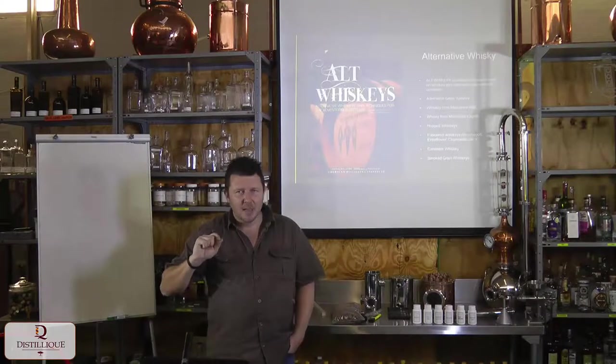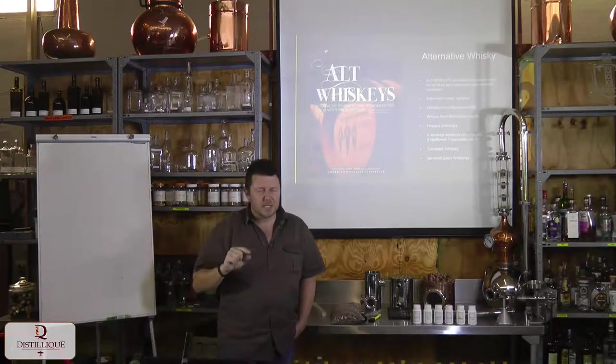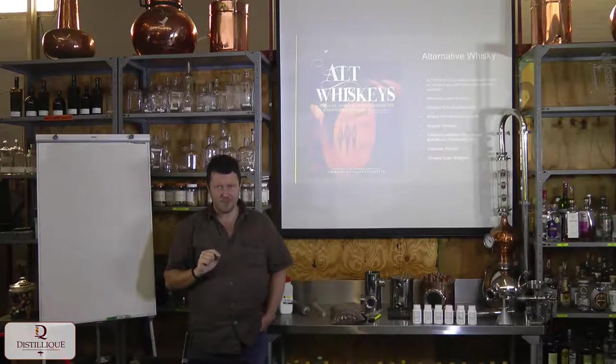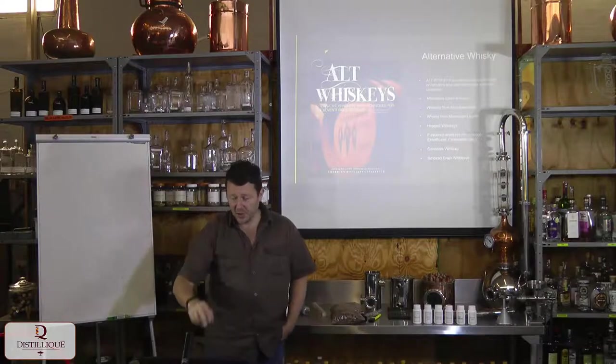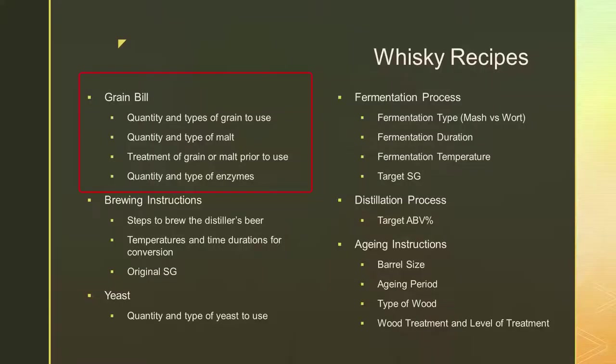In my humble opinion, the bare minimum a whisky recipe should contain is the following. First, the grain bill — the entire grain bill — the quantity and types of grains to use, very specific, down to the cultivar. I can't just say maize. What maize? There are many different types. So what cultivar and what quantity of that grain should be used?